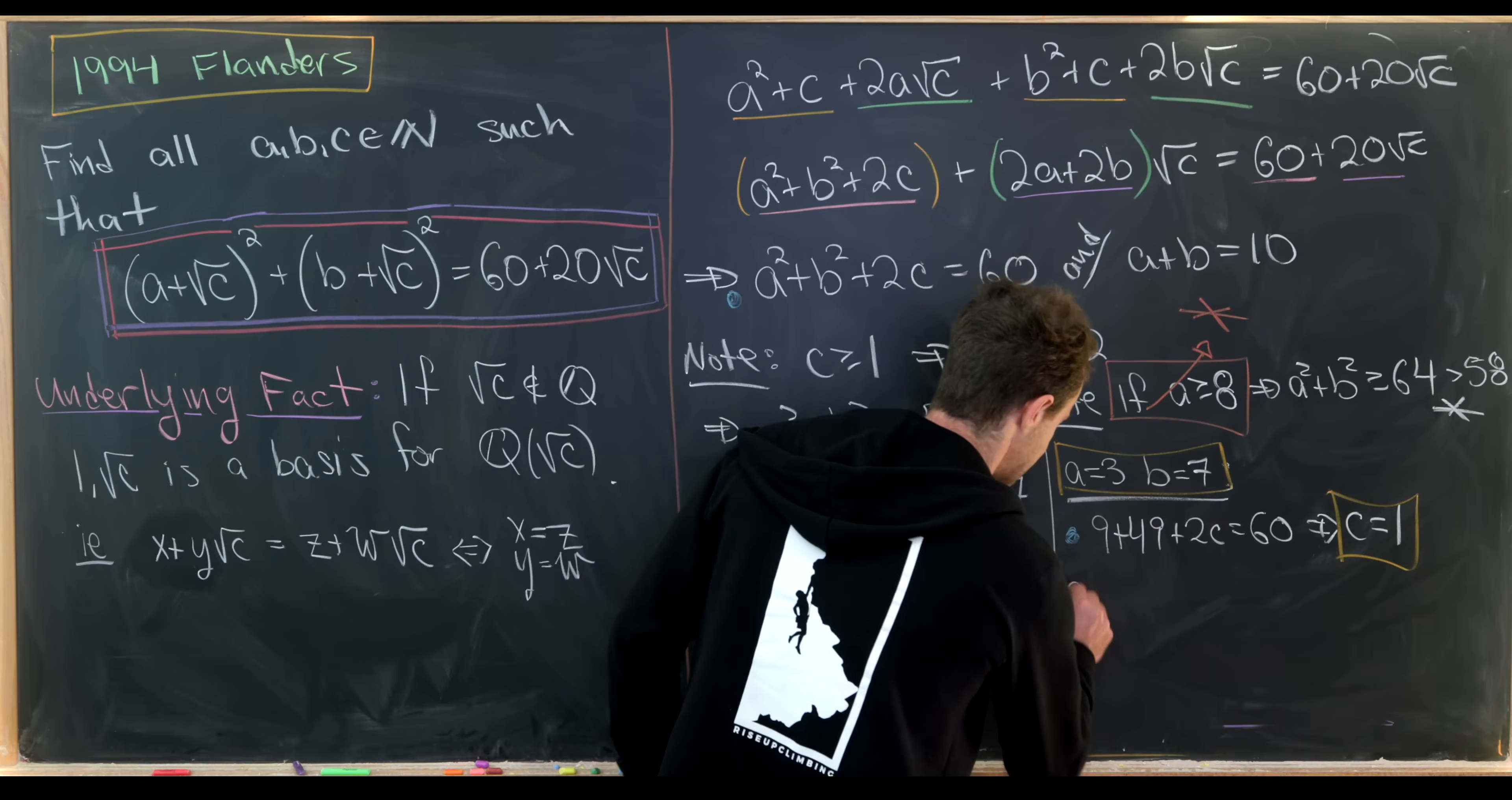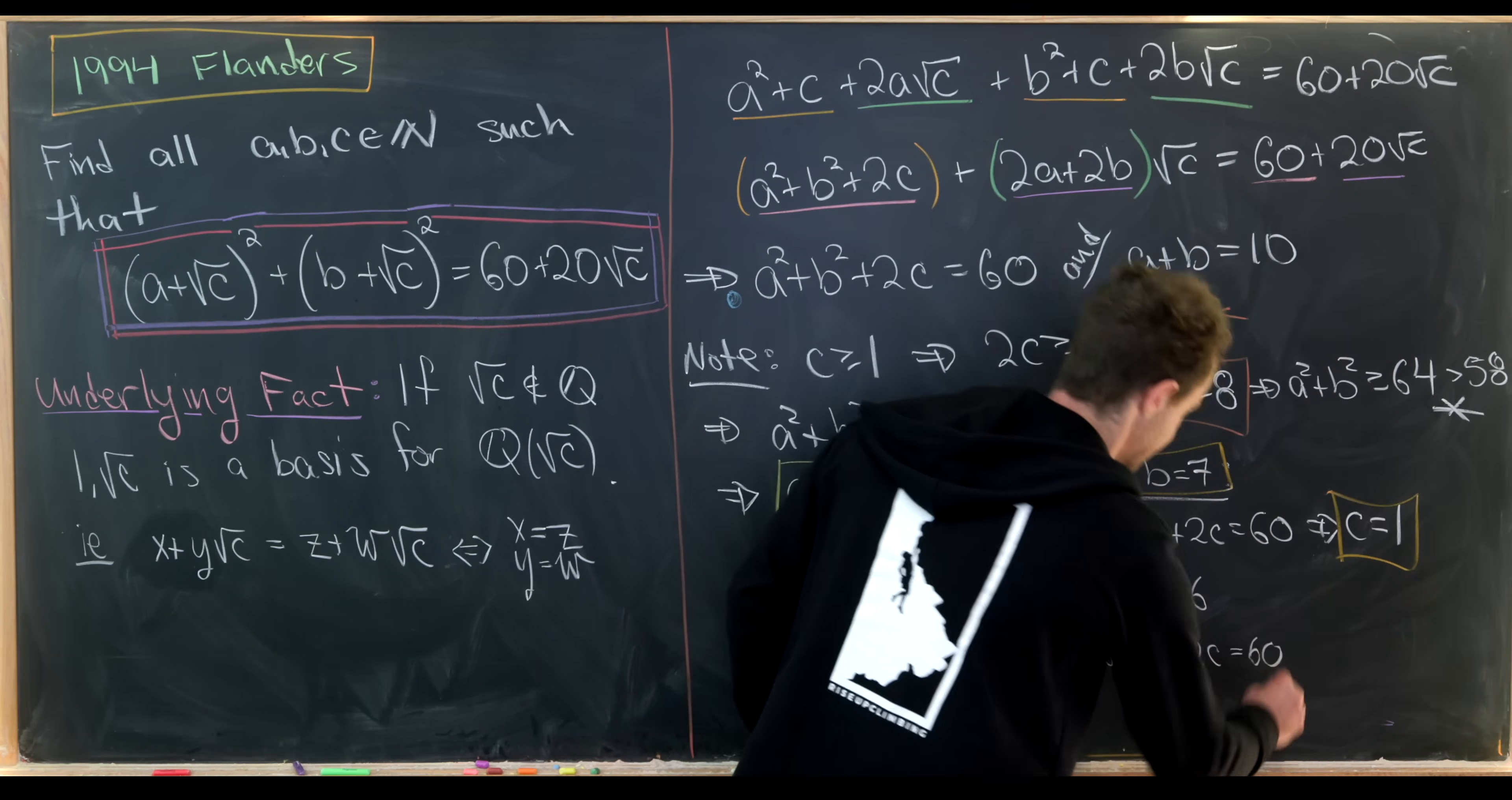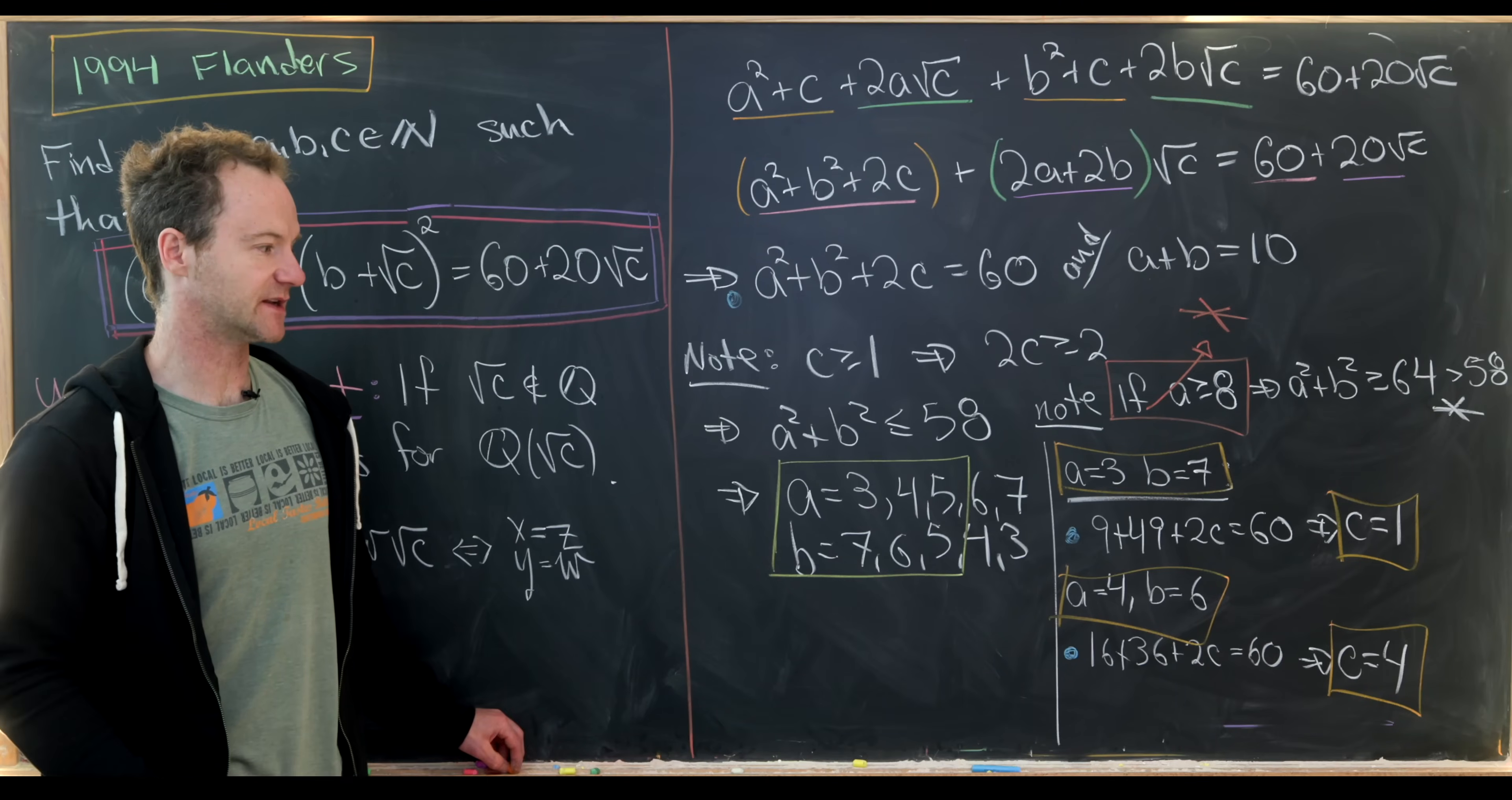Now let's look at the next case when a is equal to 4 and thus b is equal to 6 and see what we get from that. So plugging into this blue dot again, we'll have 16 plus 36. So 16 plus 36 plus 2 times c is equal to 60. But now via simple arithmetic, what we'll get here is for c to be equal to 4. And that gives us really our second or our third and fourth solutions. So we'll have a is 4, b is 6, and c is 4. Or a is 6, b is 4, and c is 4.